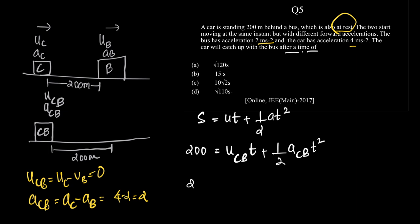The equation further reduces as 200 equals, this term gets equal to 0, so half into acceleration of car with respect to bus is 2, into t square. 2 and 2 will cancel. So what we get is t square is equal to 200, in which case t is equal to root of 200.